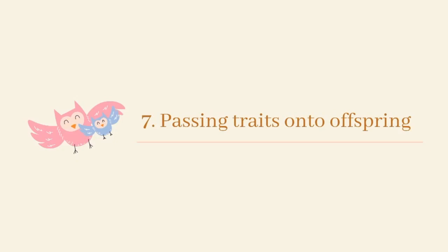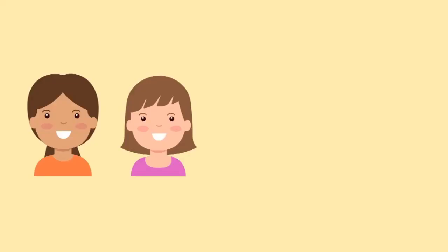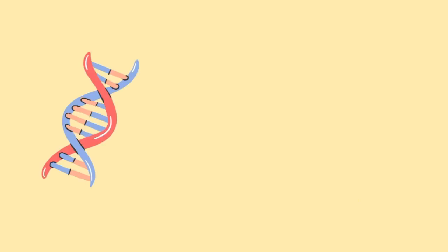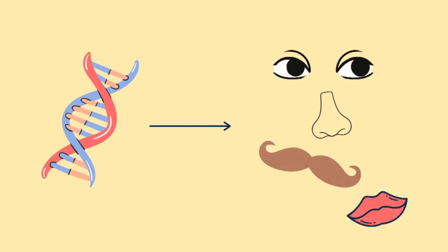7. Passing traits onto offspring. Have you ever noticed that siblings always look alike? This is because of a molecule called DNA in our cells. When organisms reproduce, the DNA is passed onto the offspring, which brings certain traits of the parents to the offspring as well.